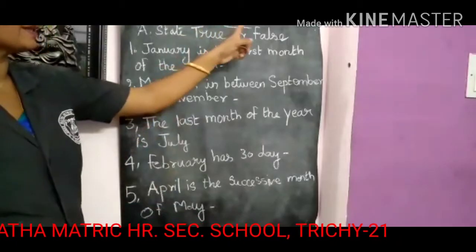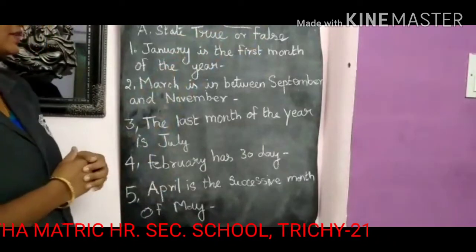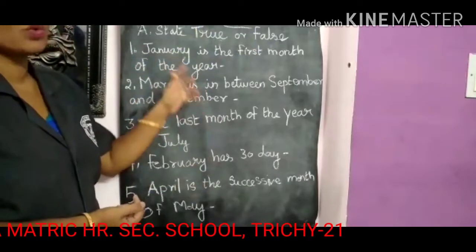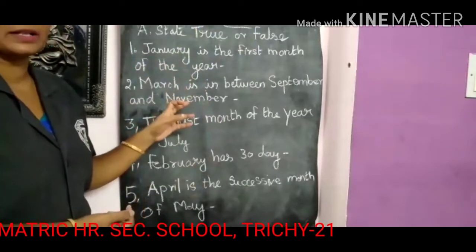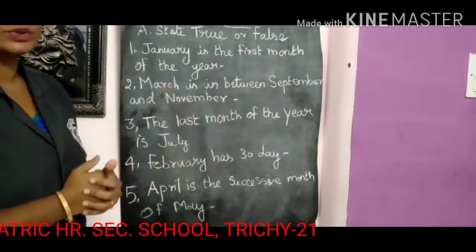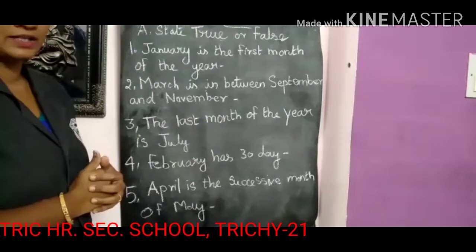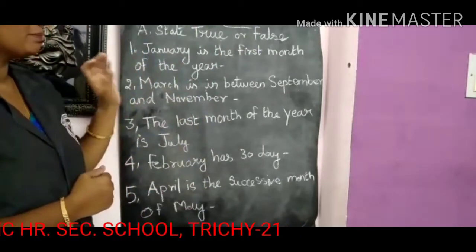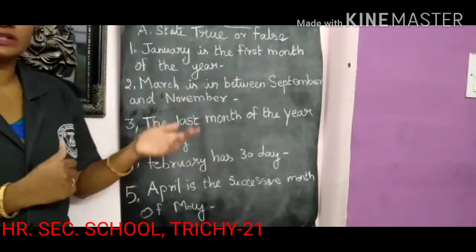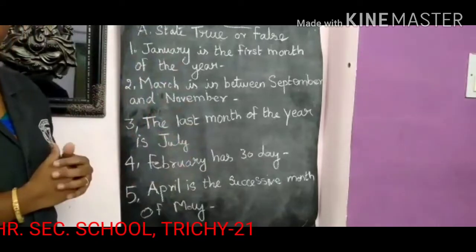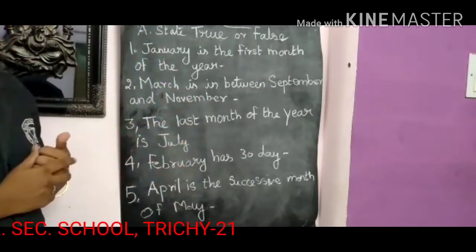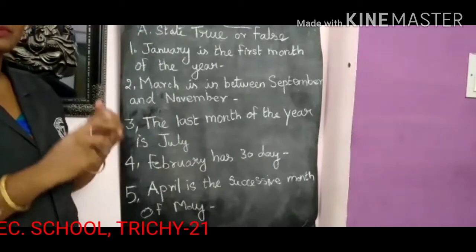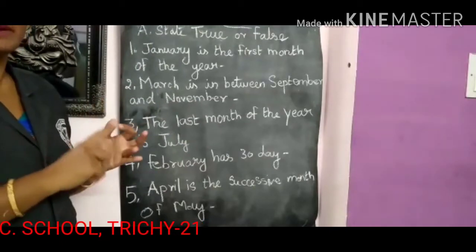Exercise number 5.2 — here you want to say whether a sentence is true or false. These questions are based on the months of the year, so once again let's recall the months. You know there are 12 months in a year, starting from January.